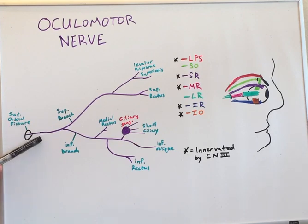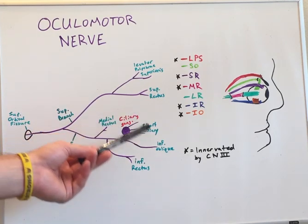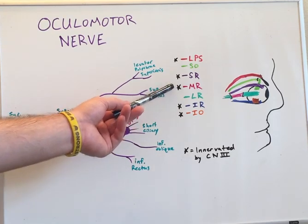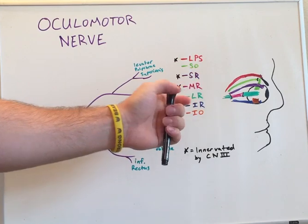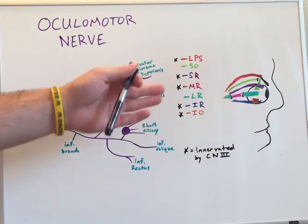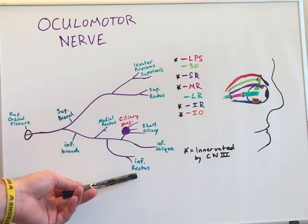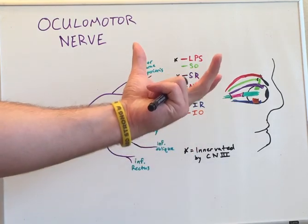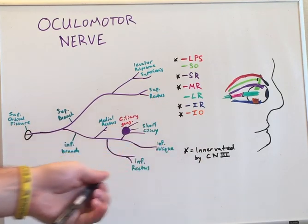The inferior branch has many different branchings, including the medial rectus, seen here in pink, which functions to adduct the eye or rotate the eye towards your nose. The inferior rectus, seen here in blue, functions to tilt the eyeball in a downward gaze.